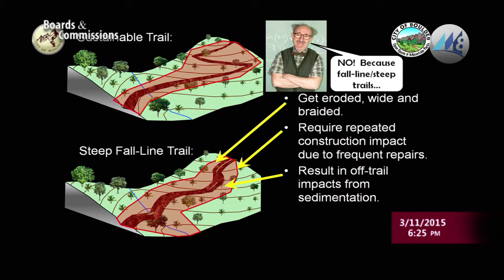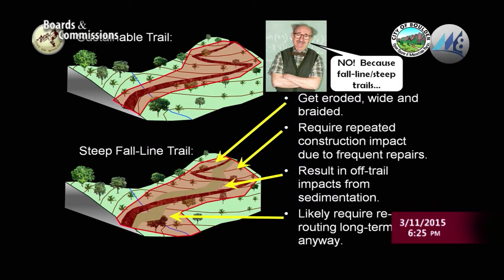It results in off-trail impacts from eroded soil, which ends up in waterways and smothers vegetation, causing disturbance. It's also an invitation for non-native weeds to move into that disturbed soil. And ultimately, the trail will likely require rerouting at some point anyway — a second time we have to go back and design and build, which is just additional impact.